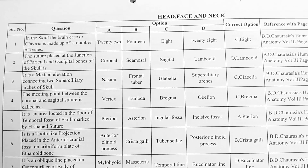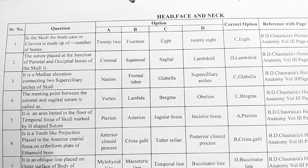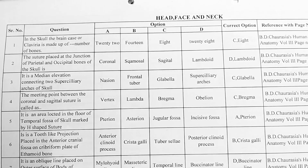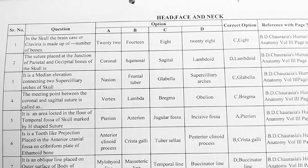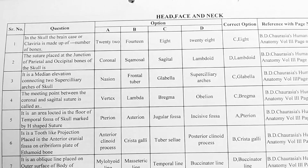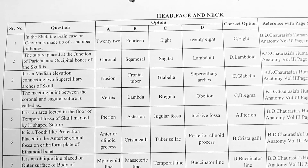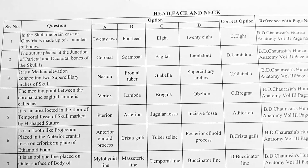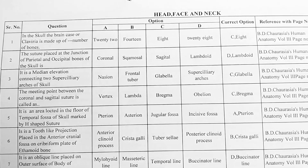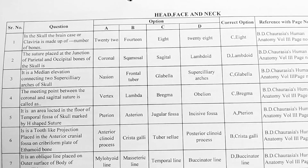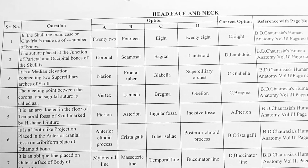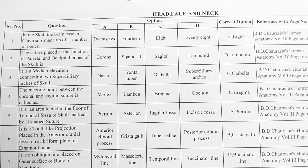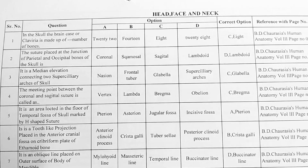Next question. The suture placed at the junction of parietal and occipital bones of the skull is: Options — A: coronal, B: squamous, C: sagittal, D: lambdoid. Correct option is D, lambdoid.